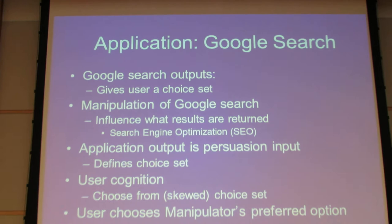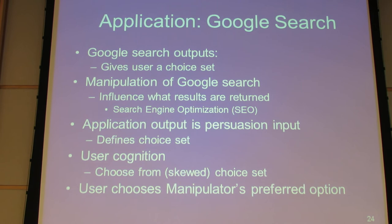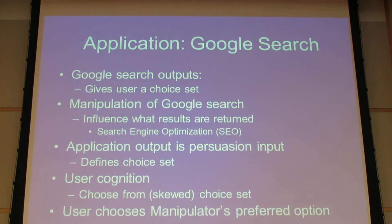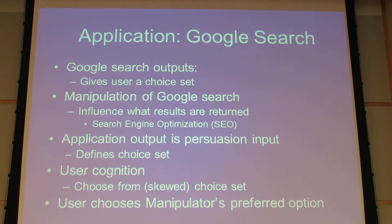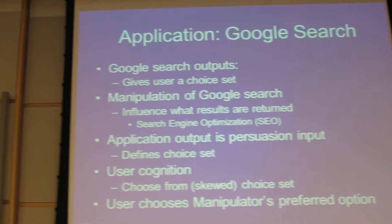There are a lot of opportunities for manipulation of that information. If you can manipulate Google search and what it returns to the user, you can affect their choice set and affect the final decision they make. Influencing the results of Google search is by now a medium-sized industry called search engine optimization. There's a lot of investment going on in influencing the choice sets presented to users, and what comes out of Google becomes the persuasion input — it's my choice set.